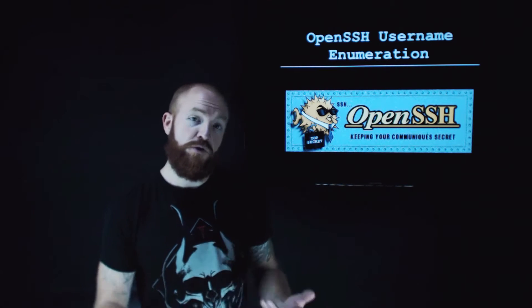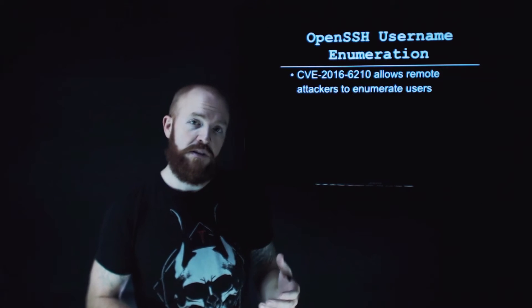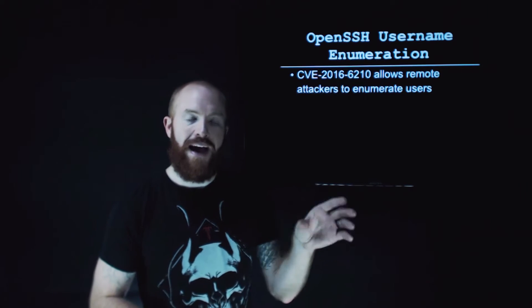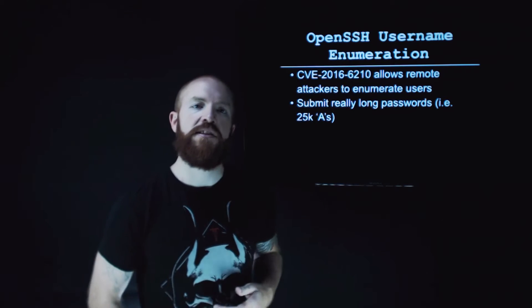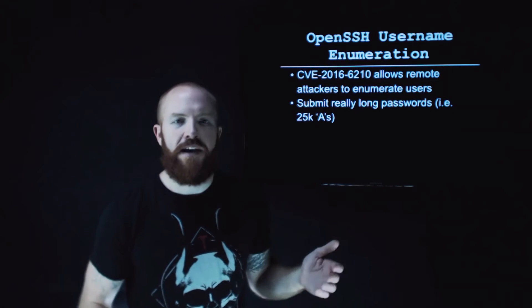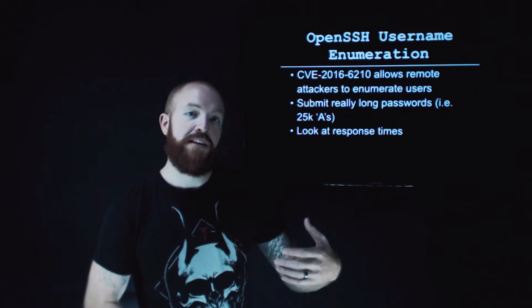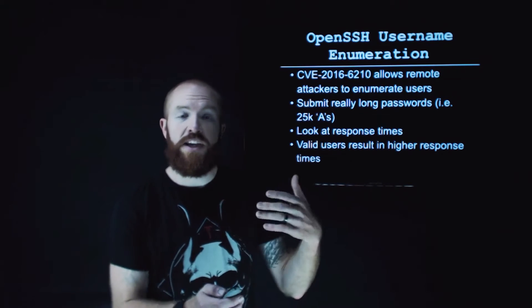Let's jump right into the OpenSSH vulnerability that was announced. Specifically, this is a username enumeration vulnerability, meaning that a remote attacker who does not have access to your system is able to discover valid user accounts on your system remotely. The way they do this is by sending passwords along with usernames that are very long — something really long like 25,000 A's — and looking at the response times coming back from the server.